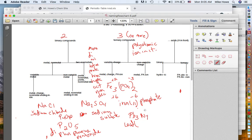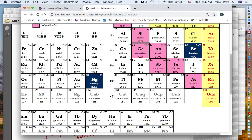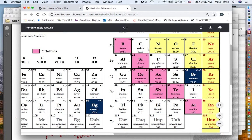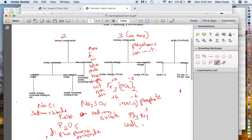So we would say lead, then we have to say what the charge is in Roman numerals. So the nitrogen is minus three. Three times four is negative 12. So that's positive 12. But there's three of them, so each one has to be positive four. So it's lead four nitride.